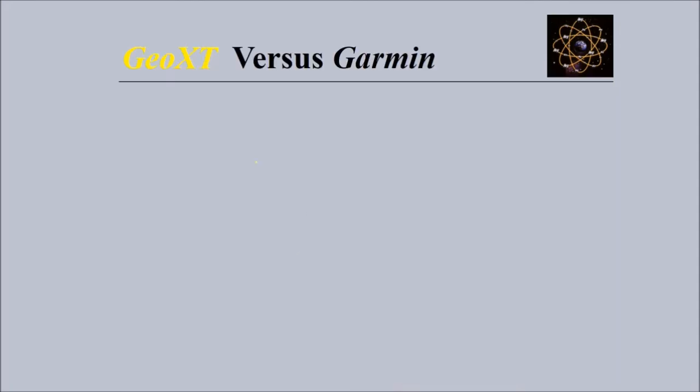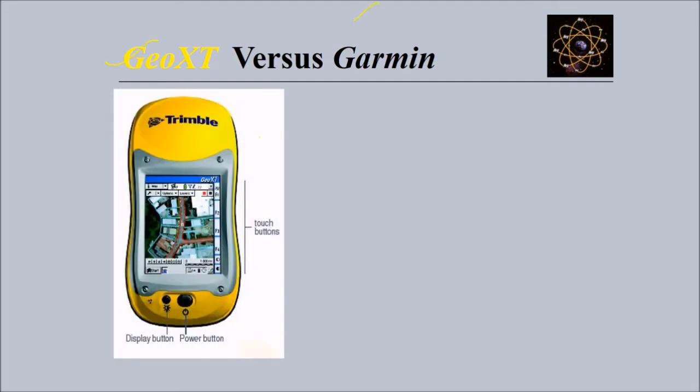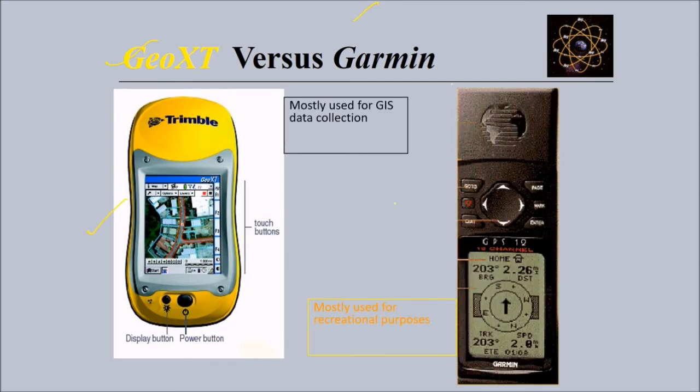These are examples of GPS receivers. There are various leading companies - Geo XT, Garmin, and Trimble. This one is mostly used for GIS data collection, and this is used mostly for recreational purposes.